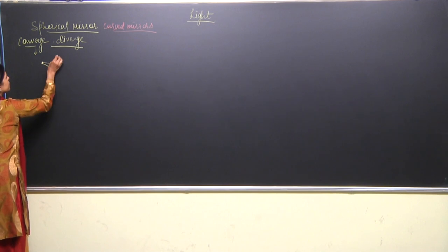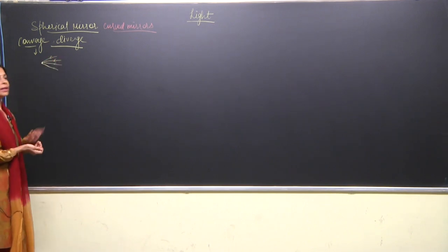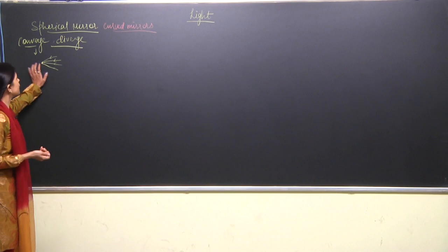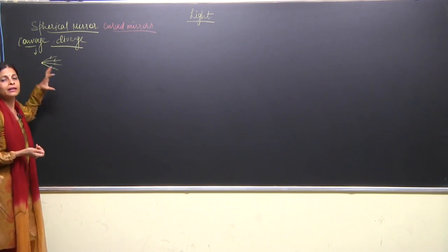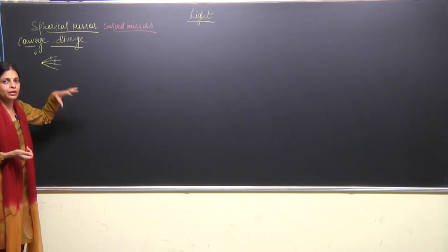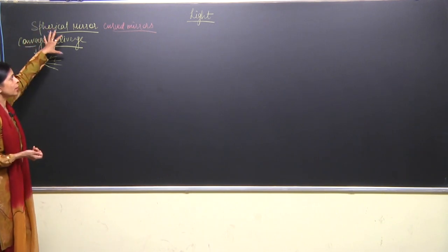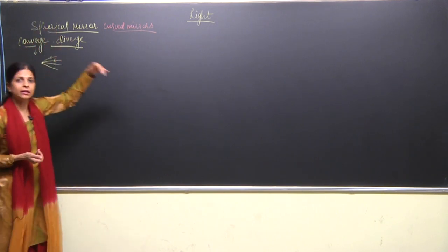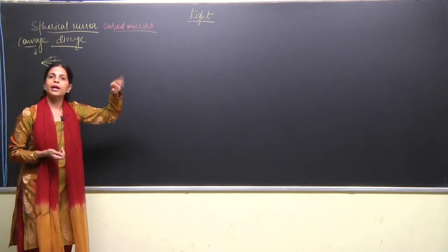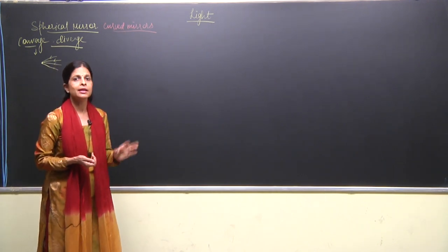So different rays coming from different directions but meeting at one place means they are getting converged. Spherical mirrors are a little curved and so are also known as curved mirrors.